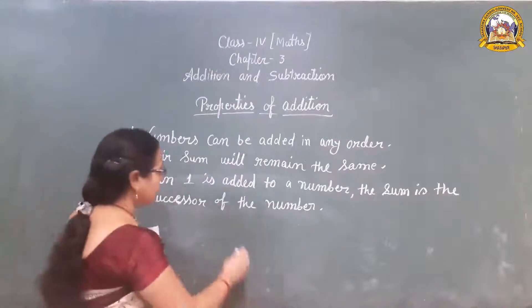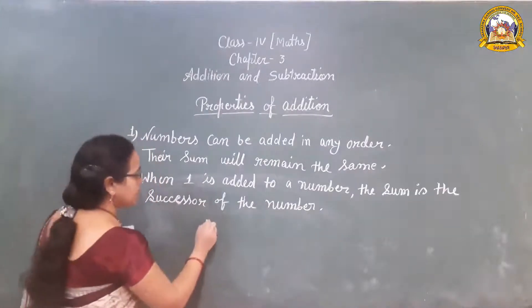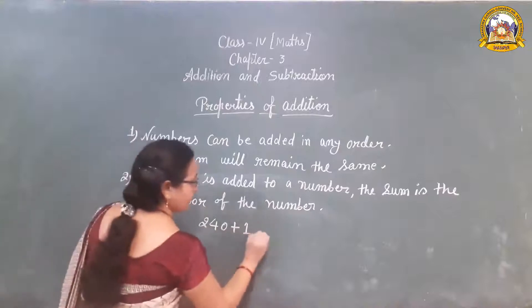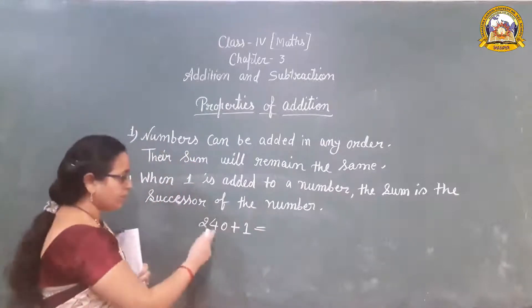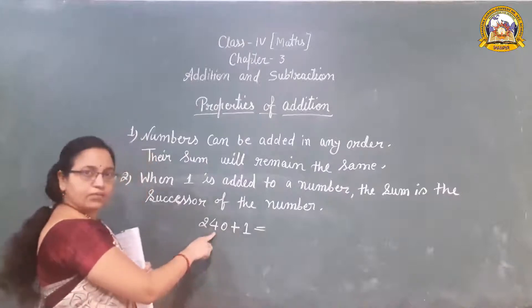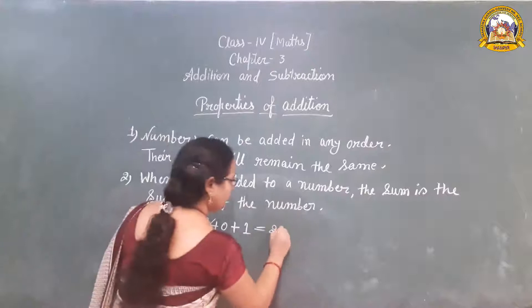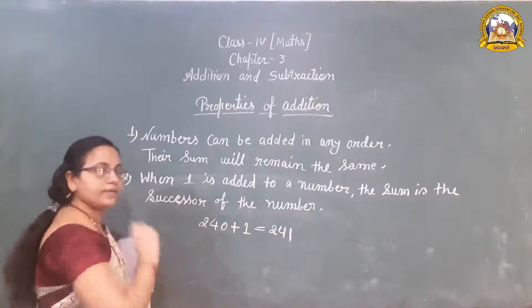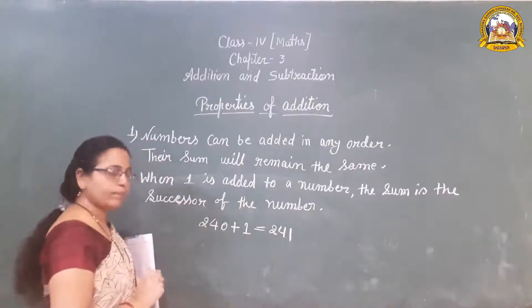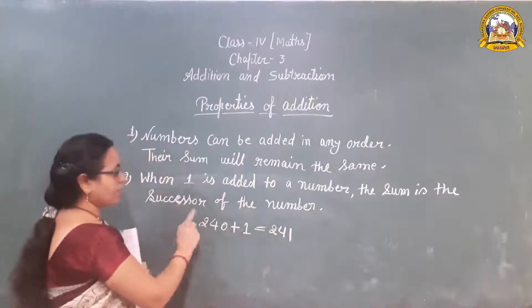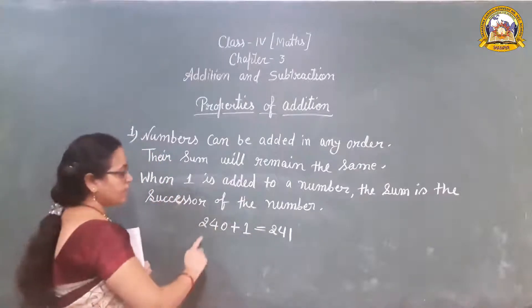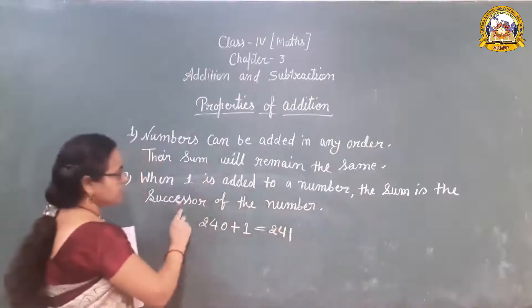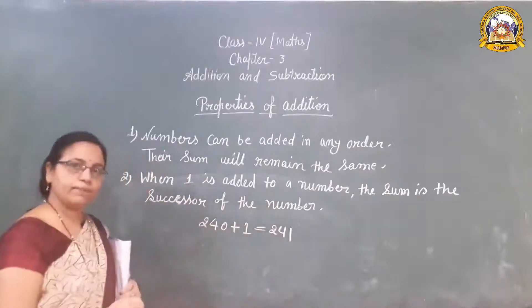Let us look at an example. Suppose the number is 240 and when we add 1 to this number, we get the after number of 240, which is 241. It means 241 is the successor of 240. When 1 is added to any number, the sum is the successor of that number. So this property is clear.